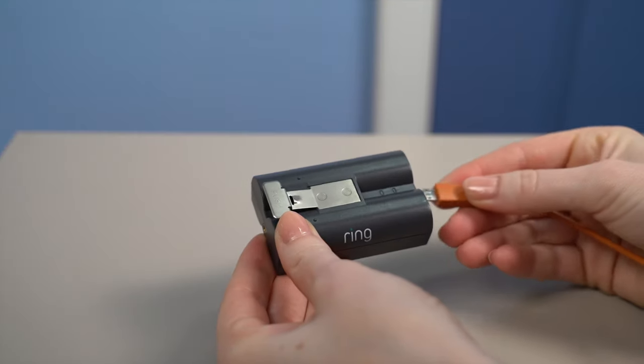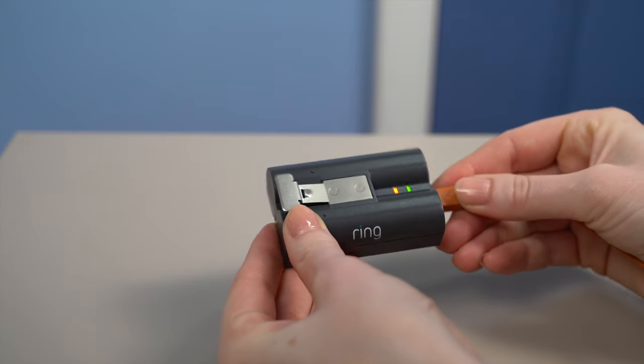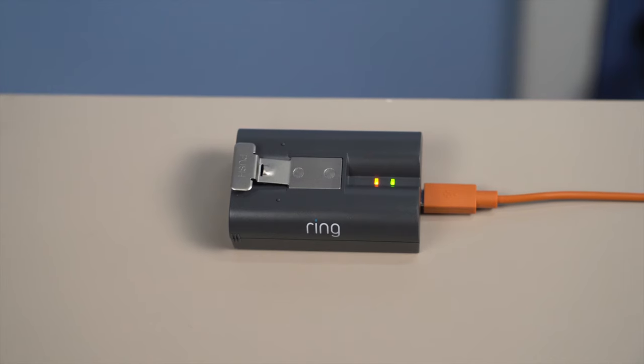Plug the charging cable into the battery. While charging, both lights will be lit. When only one light is lit, it's fully charged.